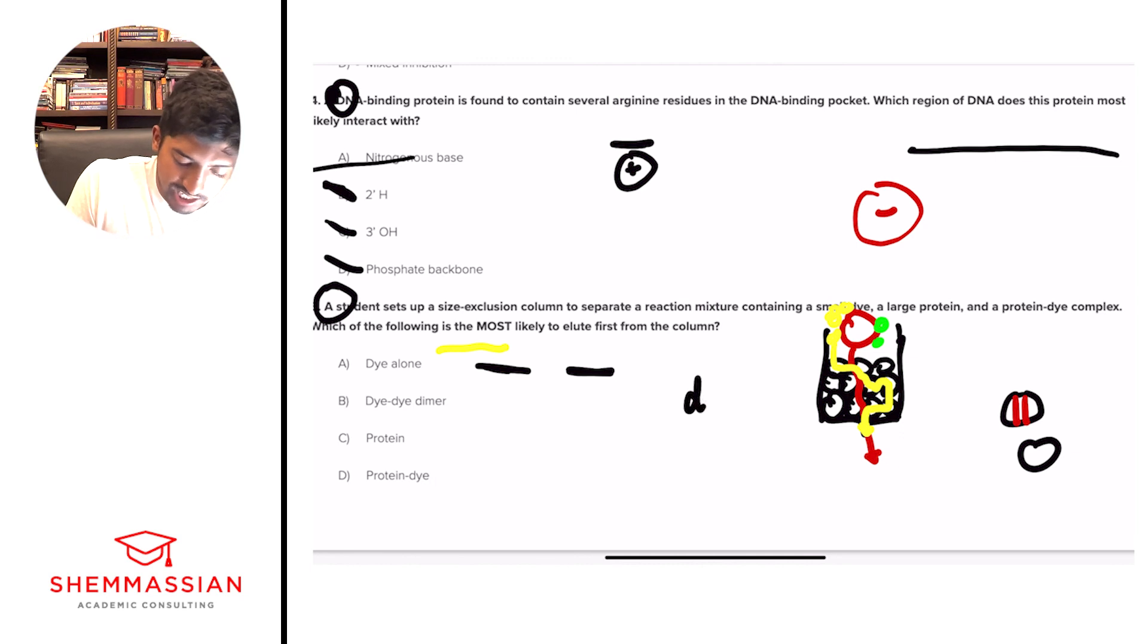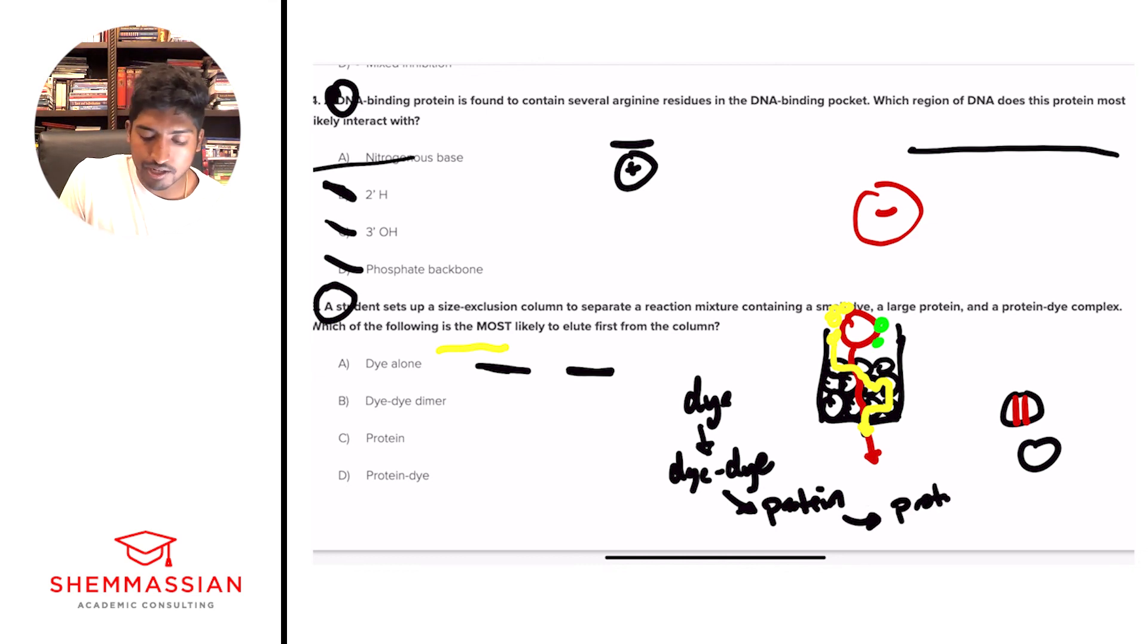The dye alone will be the smallest, followed by what? A dye-dye complex, right? If we're just looking at our answer choices, the dye-dye complex, you have two dyes. They're both small, small plus small, medium size. Then we'll have what's next. We'll have the protein because it's a large protein. Okay? Then what's next? The protein dye complex. Why? We have a big thing and a small thing. If we put them together, it's going to be greater than the big thing or the small thing alone. So as a result, we note that the protein-dye complex is the biggest thing we can have. As a result, we'll elute all the way first. Remember, chromatography is trying to separate things. And in this case, the biggest thing goes first and the smallest thing comes later. So we can choose D as our answer choice and eliminate A, B, and C. And we did it. Five for five. Great work, team.